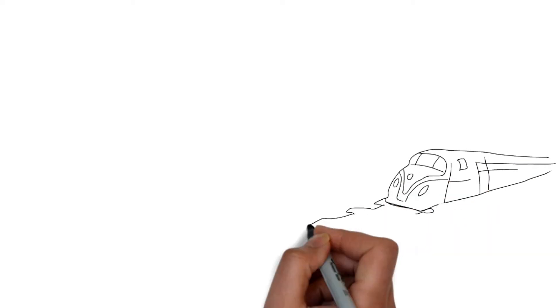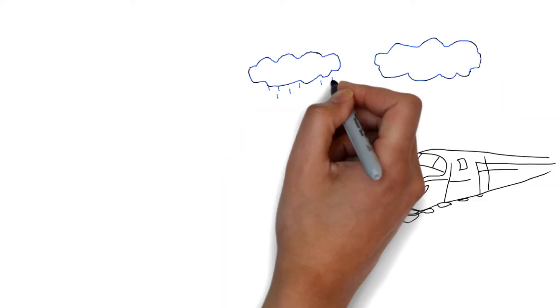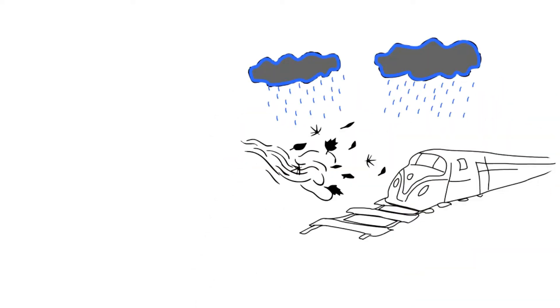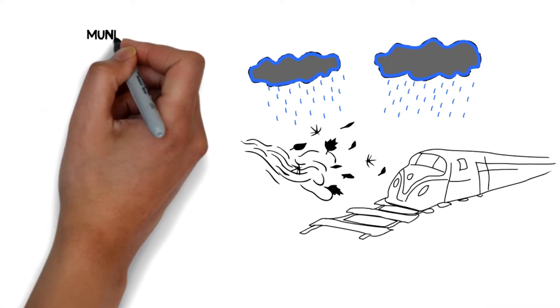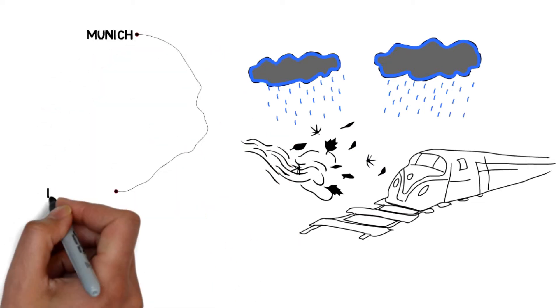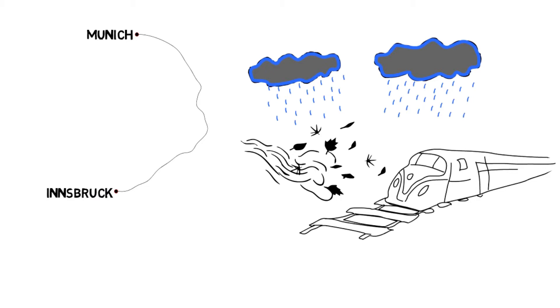It was a dark and stormy night on the Midnight Express. What you thought would be a quick train ride from Munich to Innsbruck turned into the most prolonged three hours of your life.